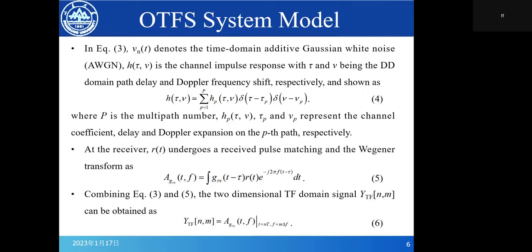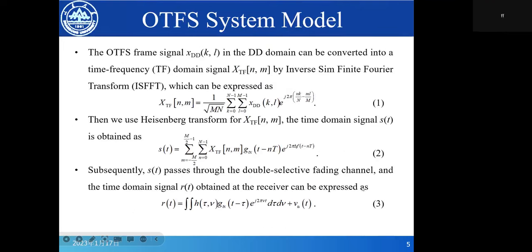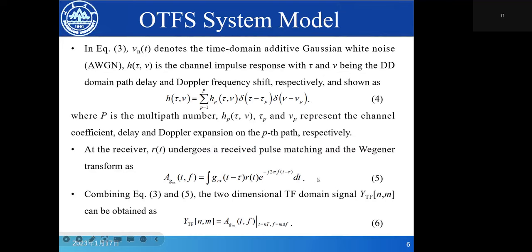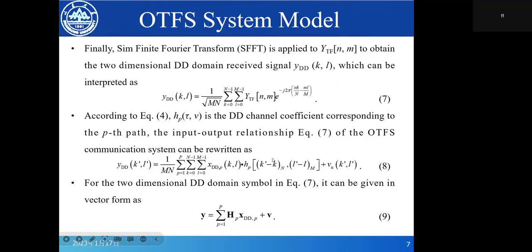At the receiver, r(t) undergoes a receive pulse-matching filter and Wigner transform as equation 5. You can combine equations 3 and 5. The two-dimensional TF domain signal y_TF(n,m) can be obtained as equation 6. Finally, we can use the SFFT on y_TF to obtain the two-dimensional DD domain received signal y_DD(k,l), which can be expressed as equation 7.